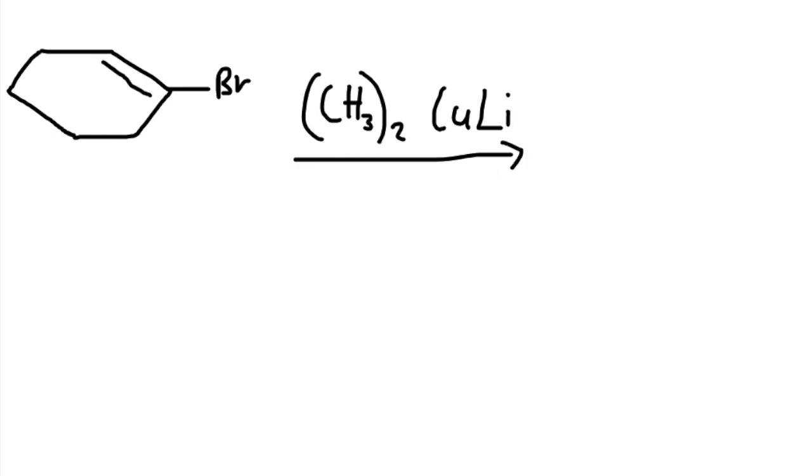So in this case, if we have a structure like this with a double bond here and bromine, with our reagent here, the Gilman reagent, a methyl, parentheses with two from the outside, all we do is put the methyl, we add the methyl and remove the bromine.